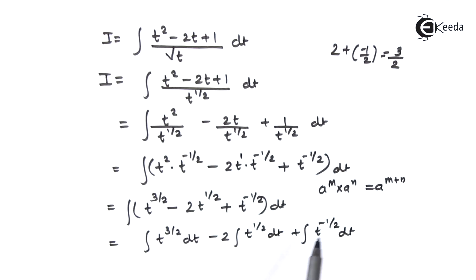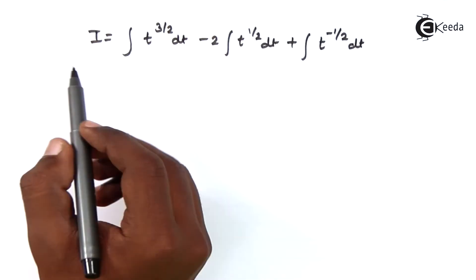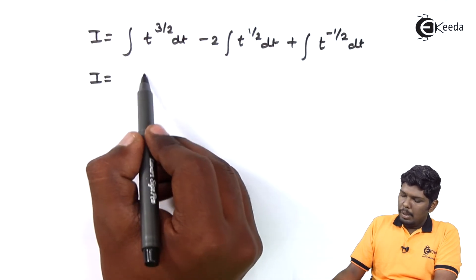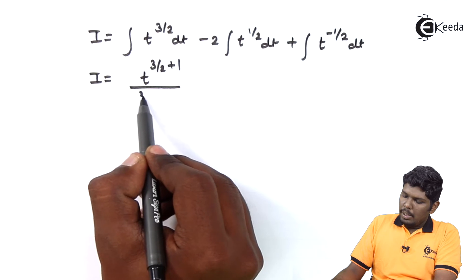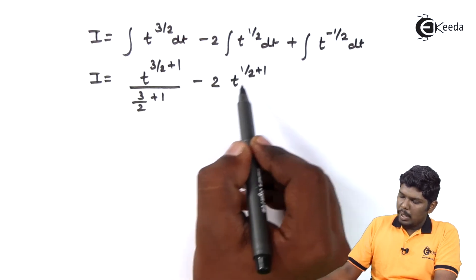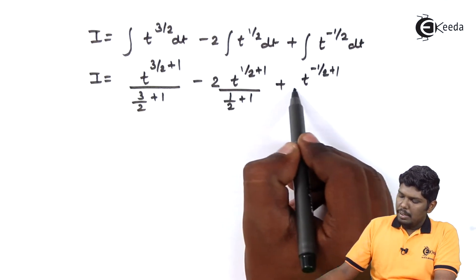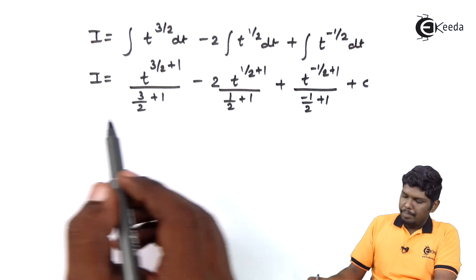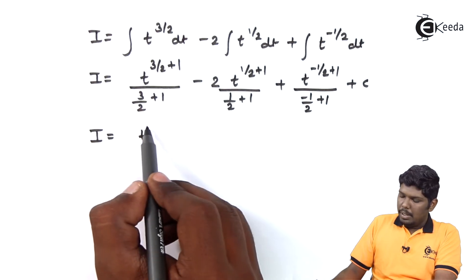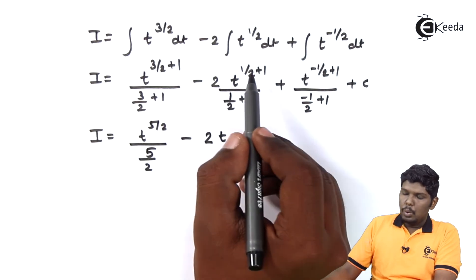Integration of each function can be found using the formula: integral of x raised to n equals x raised to n plus 1 upon n plus 1. So integration of t raised to 3 by 2 is t raised to 3 by 2 plus 1 upon 3 by 2 plus 1, minus 2 times t raised to half plus 1 upon half plus 1, plus t raised to minus half plus 1 upon minus half plus 1, plus c. On further solving, t raised to 5 by 2 upon 5 by 2.